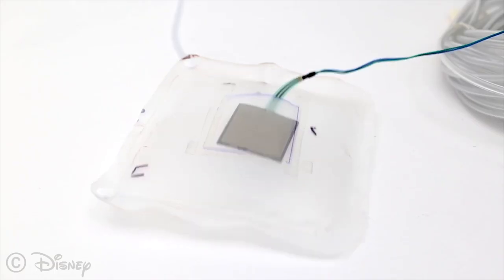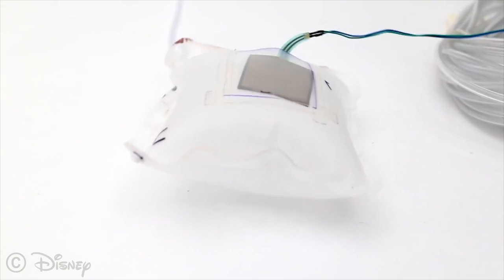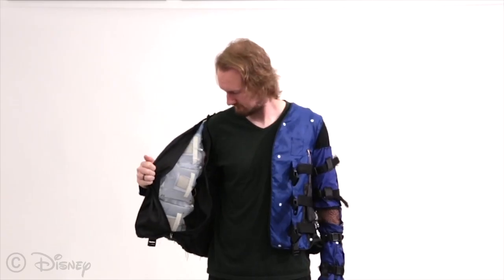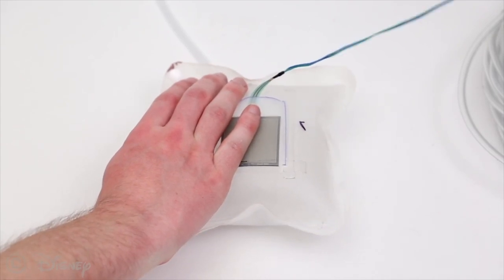Air compartments within the jacket inflate to exert a force on the body relative to force-sensitive resistors. Compartments can be actuated for pressure or for vibro-tactile feedback, or both.